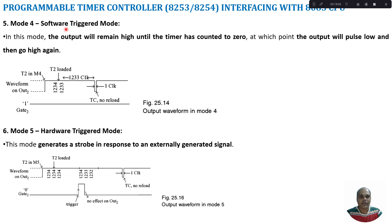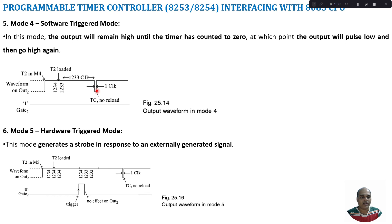Mode 4 is software triggered mode. In this mode, the output remains high until the timer has counted to 0, at which point the output pulses low for one clock period and then goes high again. When a value is loaded and a valid gate signal is present, down counting starts. Once the count reaches 0, the output signal goes low for one clock period. Even with a valid gate signal, no reloading takes place. This mode can be used for generating a single pulse after a certain time duration.